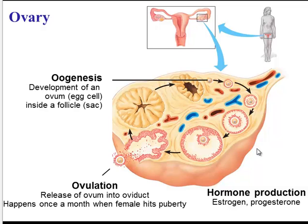Another important thing that ovaries do is produce hormones — they're also part of the endocrine system. The ovaries specifically make estrogen and progesterone.